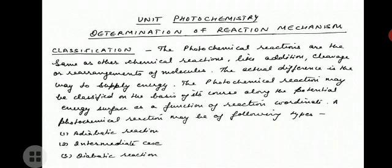However, in photochemical reaction mechanism determination, some more factors are also taken into account. First, there are a number of products obtained. Second, when measuring photochemical kinetics there are more variables — we can study the effect of the intensity or the wavelength of light on the rate of reaction. Third, flash photolysis is used for the detection of intermediates by spectra, because by this technique we can detect extremely short-lived intermediates. Fourth, there are two additional techniques, the first being the study of quantum yield.